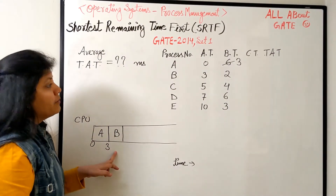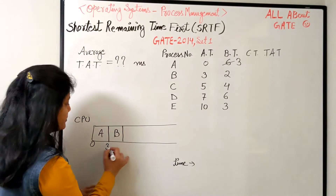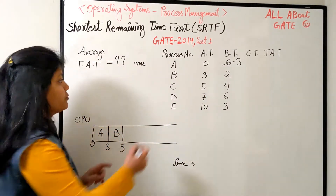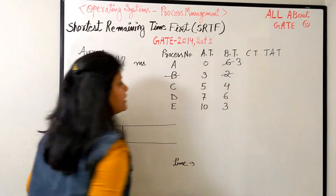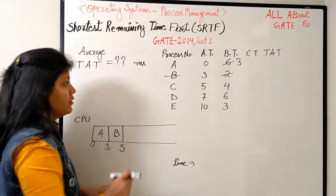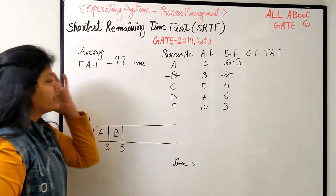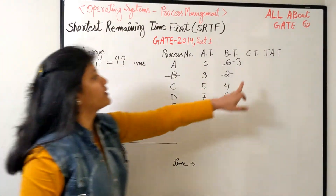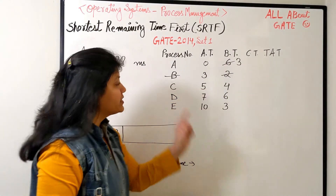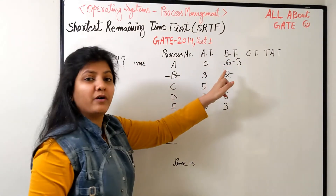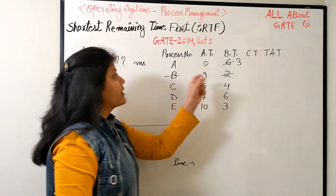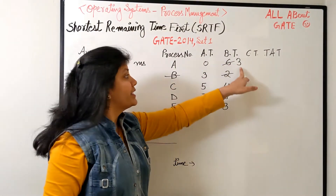B needs only two bursts, so it schedules from three to five and completely finishes. By time five, process C arrives needing four bursts. Four is more than three - don't forget we have process A with three remaining. It's important to strike off and write what is remaining so you don't get confused.